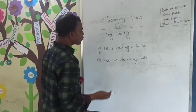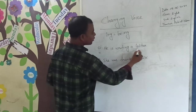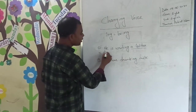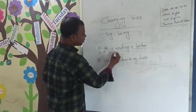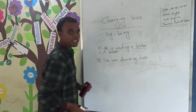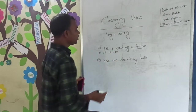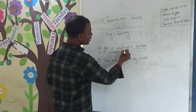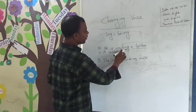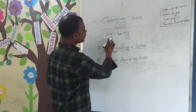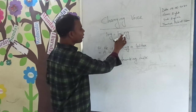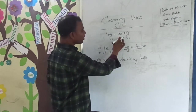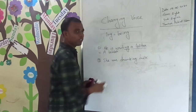According to the rules, first you have to give the object. The object is 'a letter.' Then you notice 'ing' with the verb, so you have to give a new word — 'being.' If you notice 'ing,' you have to give the new word 'being.'